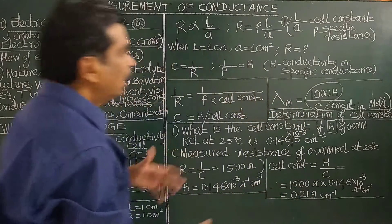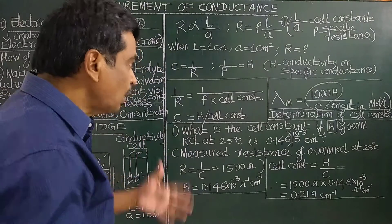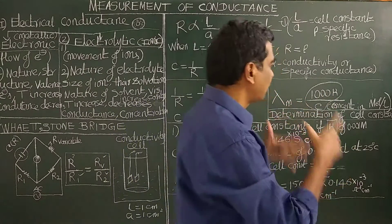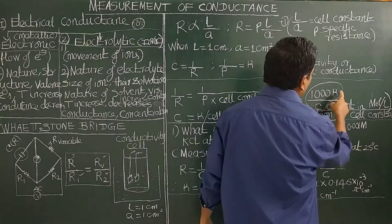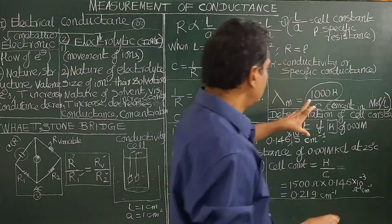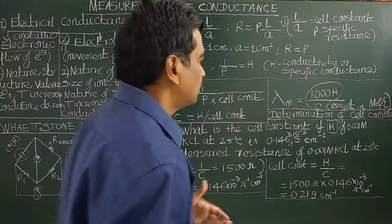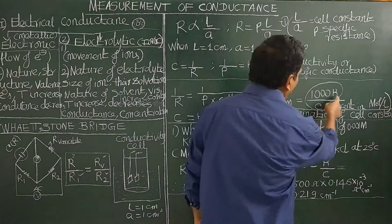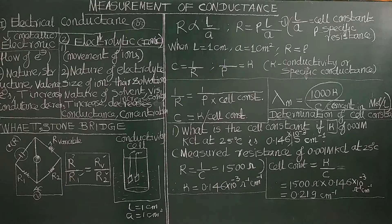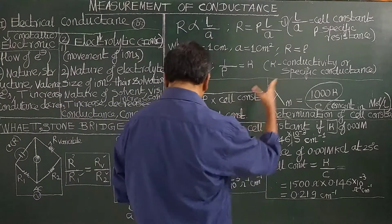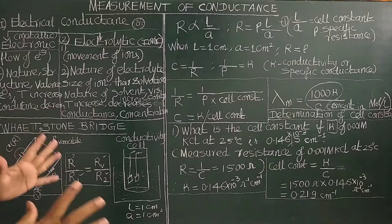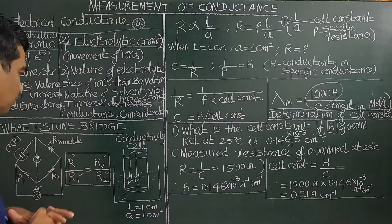If you want to calculate molar conductance, the expression used is: λ = (1000 × κ) / c, where c is the concentration in mol/L. Since κ is given and concentration is known, we can calculate λ. There are several problems based on this simple formula — if you understand this, you can solve any type of problems. Thank you for watching; we will continue.